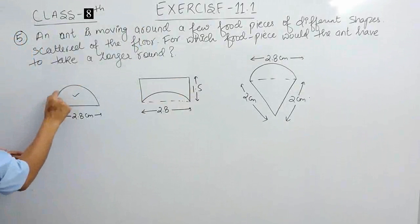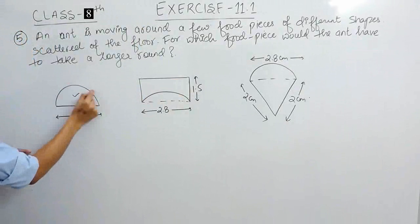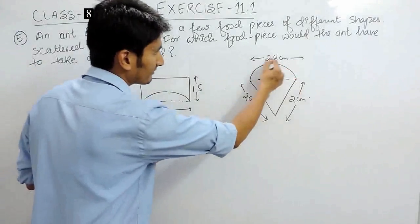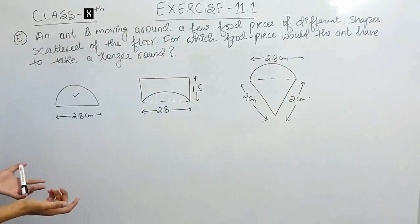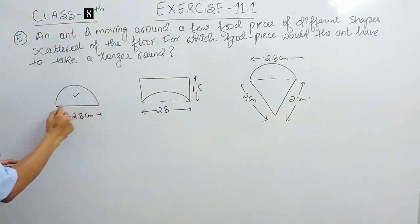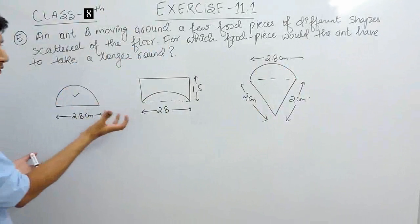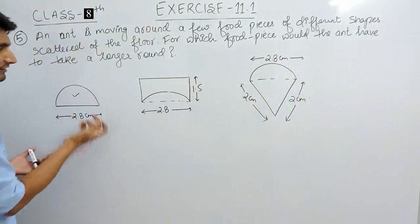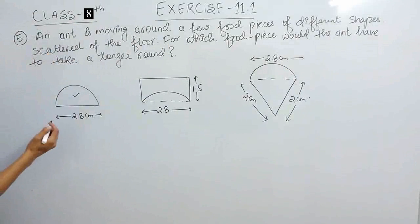That means this length, or you can say circumference, this circumference and this circumference should be same because the diameter is equal in both the cases, means the circles are equal or you can say the semi-circumference should be equal.